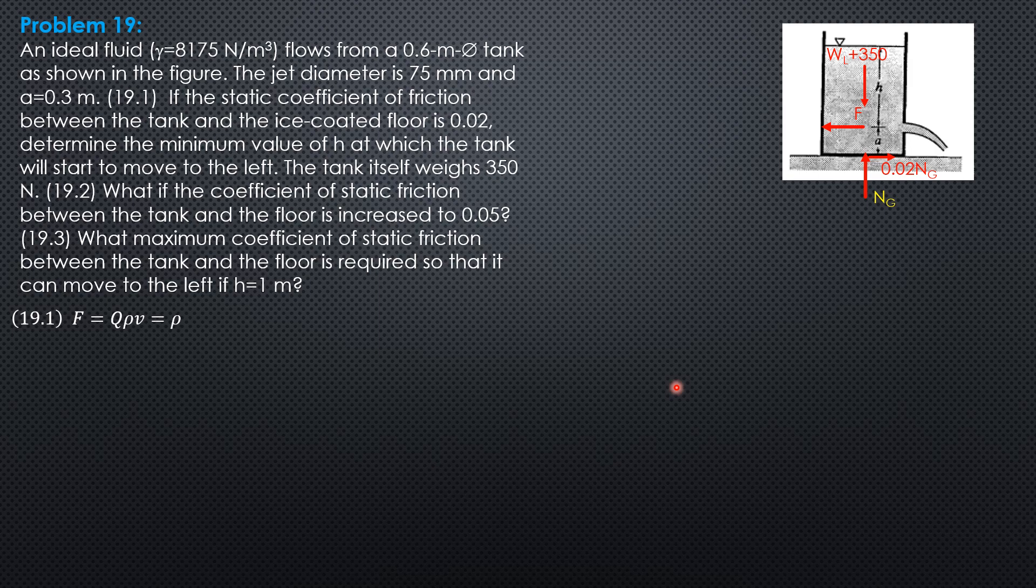So F is ρAV² or density times area times velocity squared, and it should be equal to 0.02 times NG, coefficient of static friction times NG.